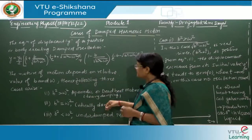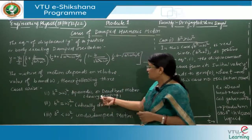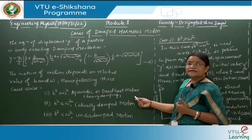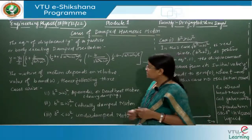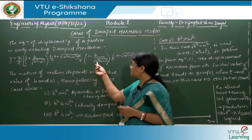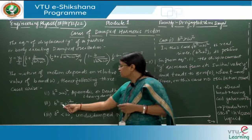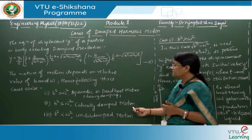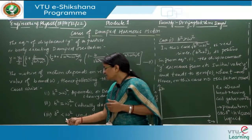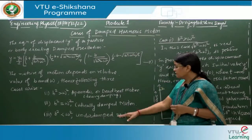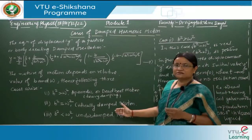Three cases arise. When b² > ω², this is called aperiodic or deadbeat motion, also known as heavy damping. The second case is when b² = ω², which is critically damped motion. The third case is when b² < ω², which is the case of under-damped motion. We will discuss all three cases one by one.